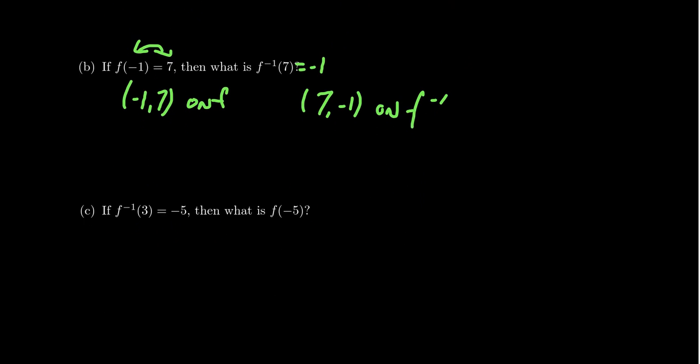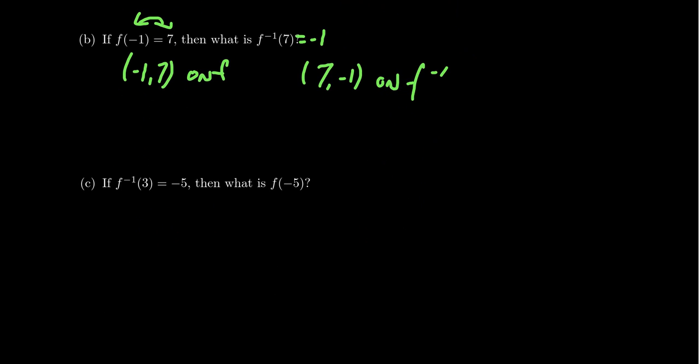And say that we know that f inverse assigns the number 3 to negative 5. Well, if f inverse assigns to 3 the number negative 5, then f will do the opposite. It'll take the number negative 5 and assign to it the number 3. And so f of negative 5 is 3.